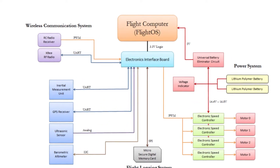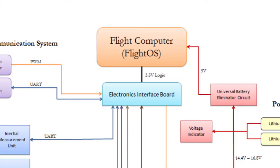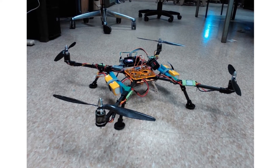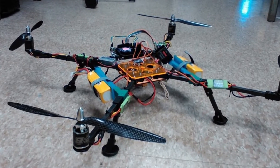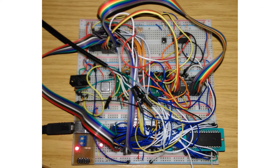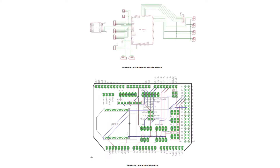Finally, we have the brain of the drone — the flight computer. If you've taken a robotics class, we use an Arduino microcontroller to control a car — the same thing happened here. The microcontroller takes commands from the RC radio and signals from the sensors, then calculates an output to the motors to fly the drone as desired. There are a lot of electronics being interfaced to the Arduino. I designed an electronic interface PCB board to simplify things and make it a lot neater.